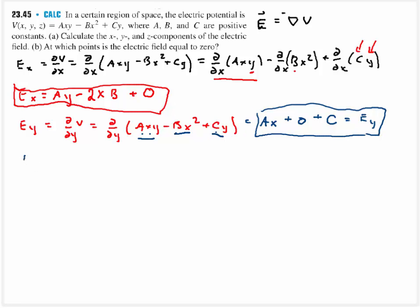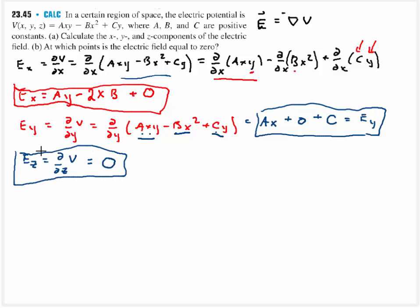For the z-component, we take the partial of the voltage with respect to z. None of the terms in the function depend on z, so they're all constants and the partial is zero — meaning Ez equals zero everywhere. For part B, we find where the total electric field equals zero, which requires all components Ex, Ey, and Ez to equal zero simultaneously.